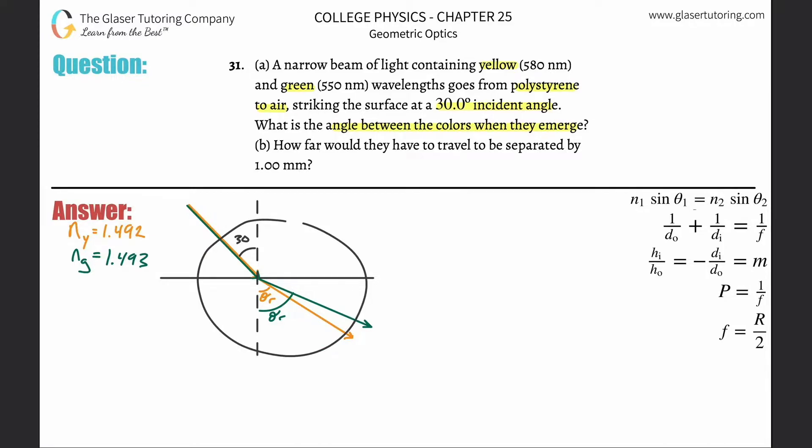All right, so here's a little picture. We've got both green and yellow light incident upon a surface. The area in here is polystyrene and this is going to be air on the bottom. Since the green light and, by the way, these values are looked up on your table...